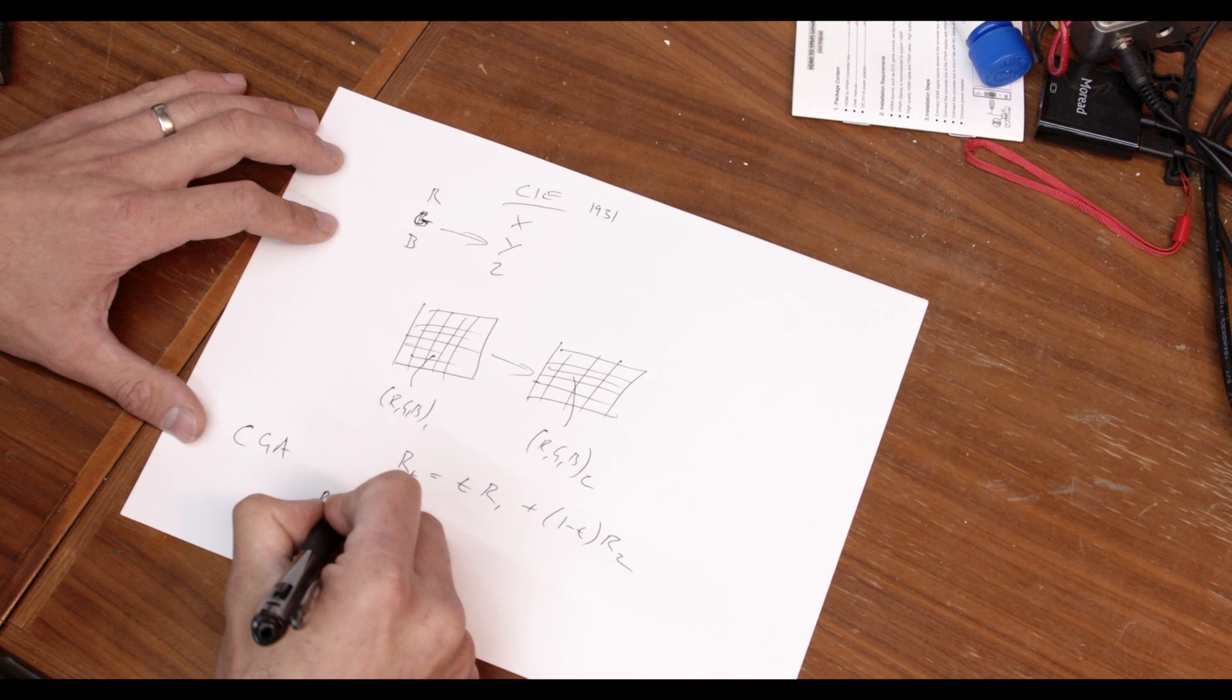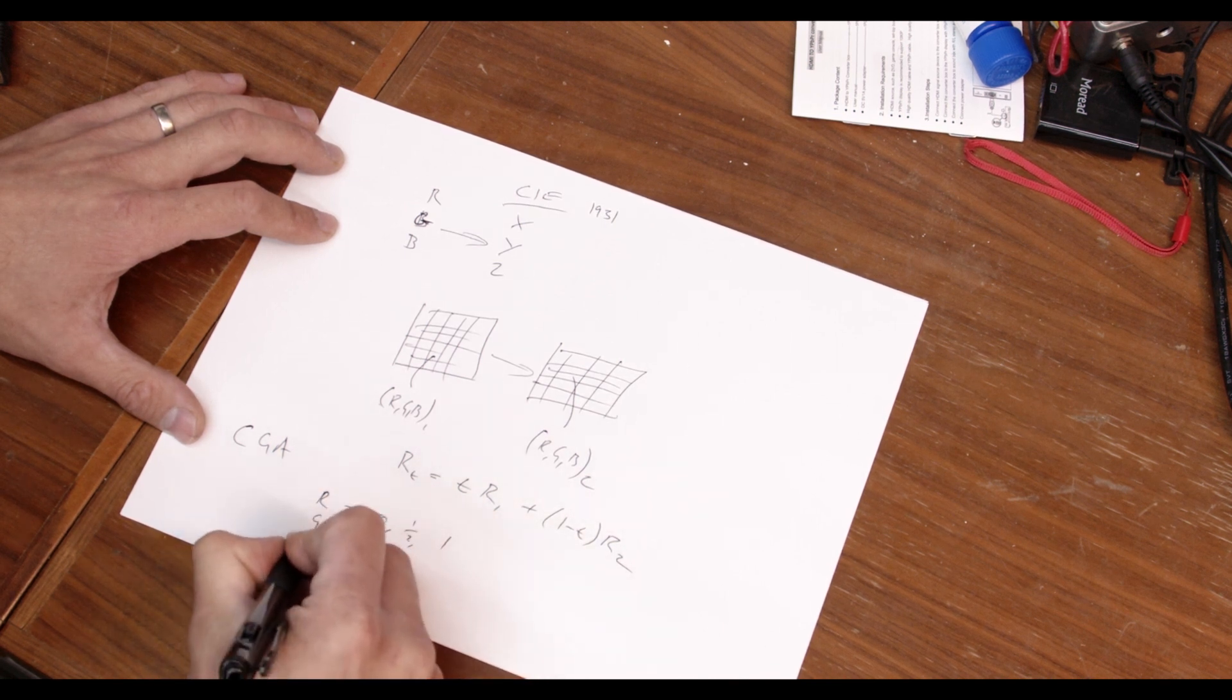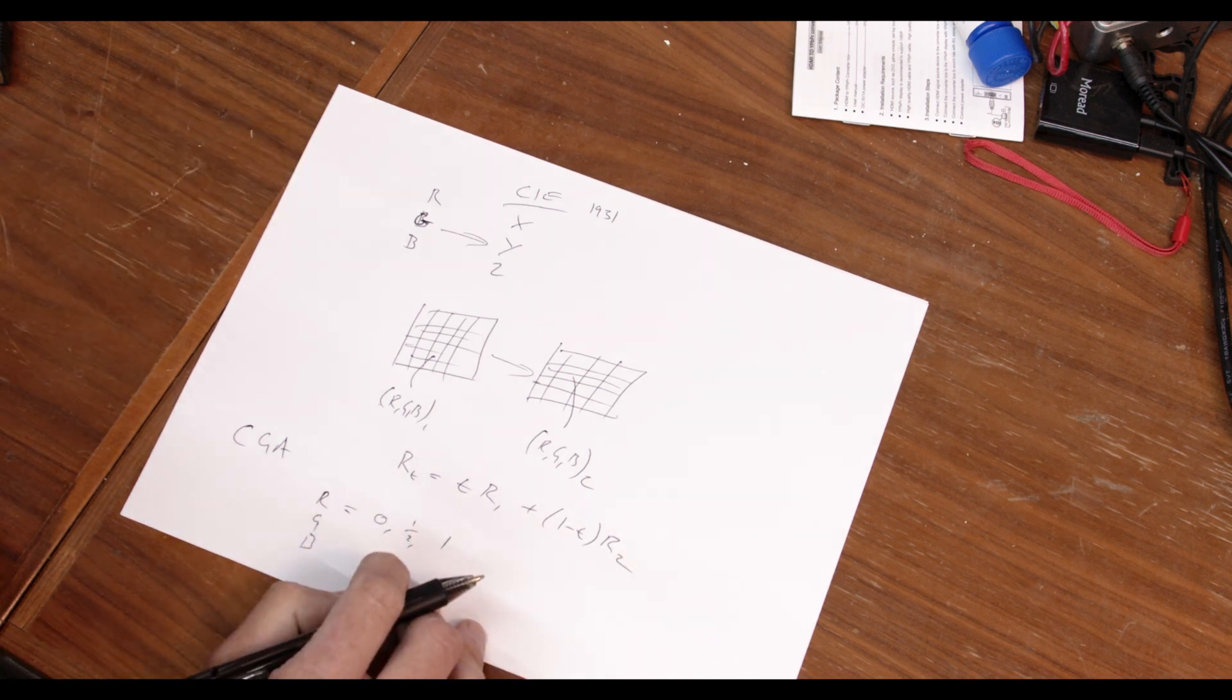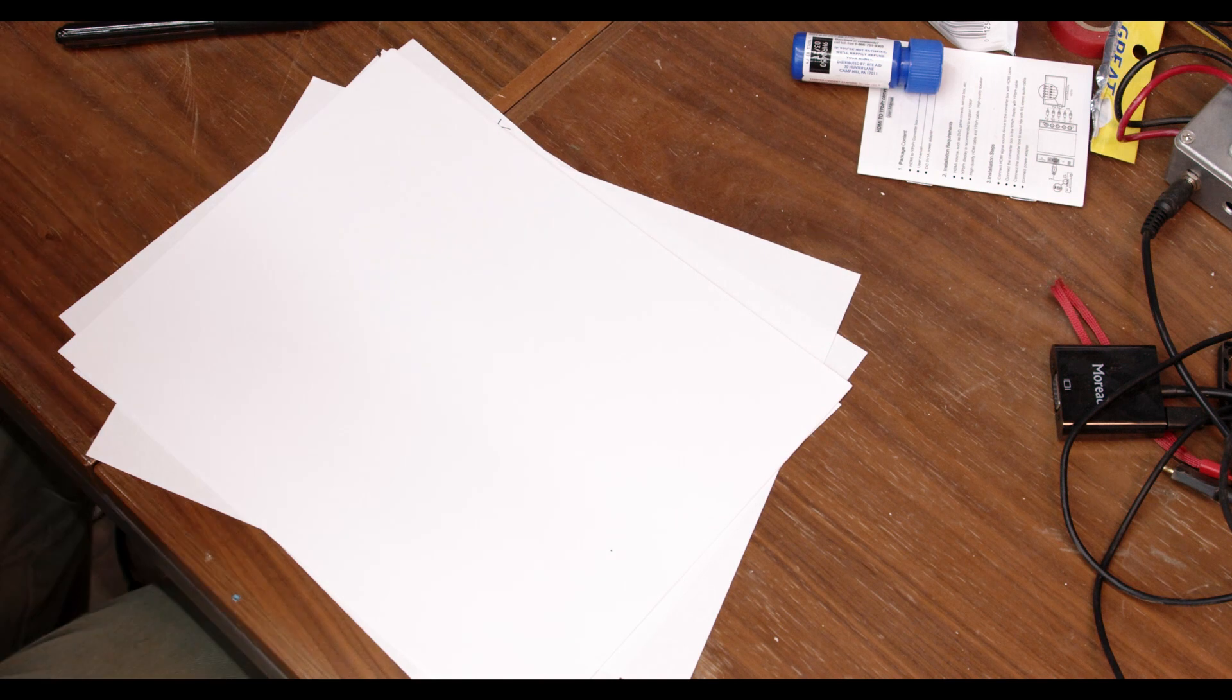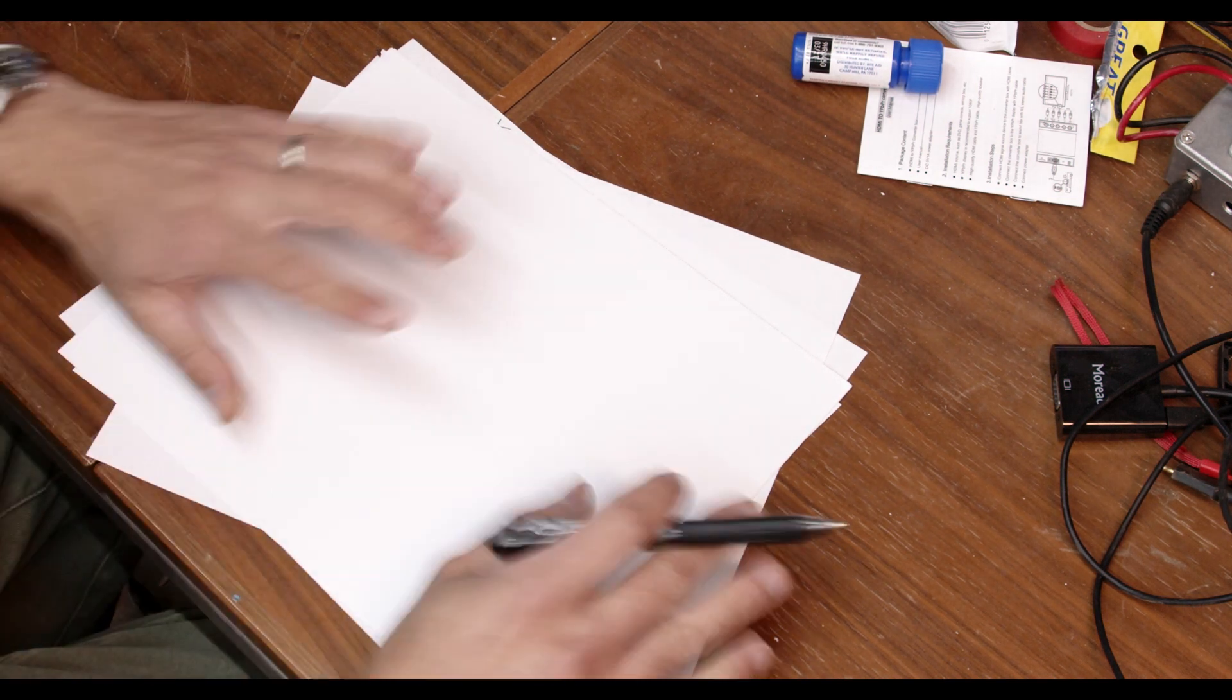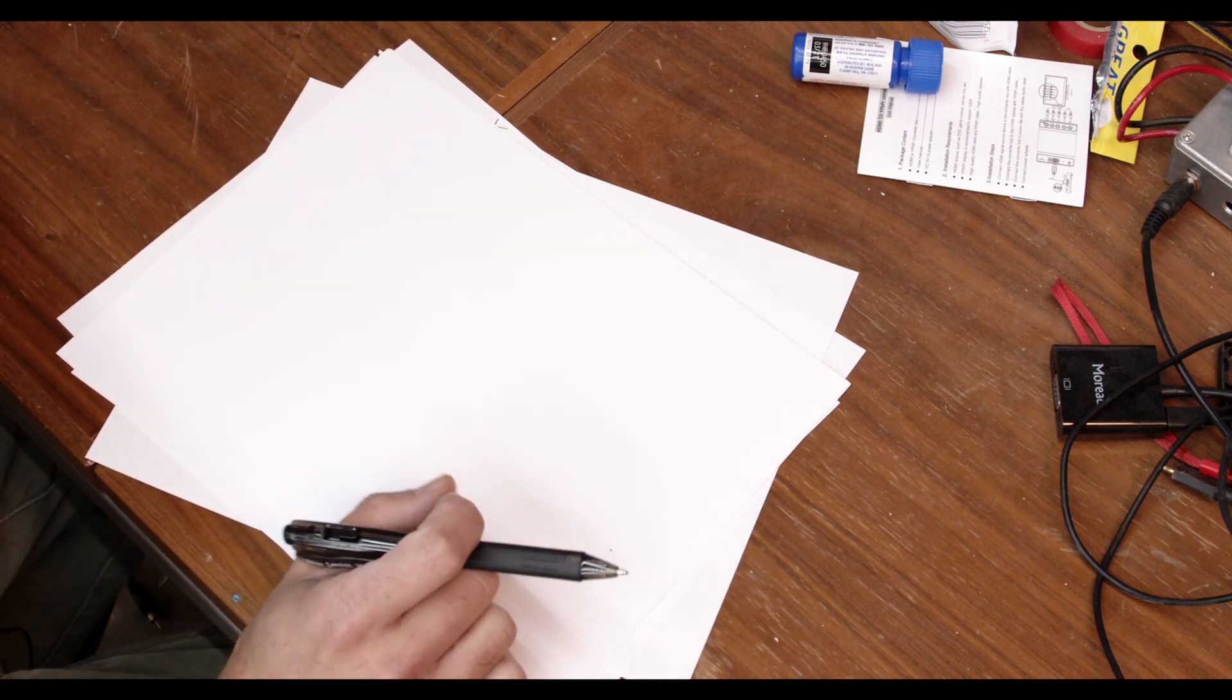So you could have red being equal to zero, a half or one, likewise for green and blue. And so really simple numbers, really easy to represent in binary. So these RGB linear color spaces, and there's a variety of them, are good for doing math, particularly on low power computers. But there are some problems with the RGB color space.